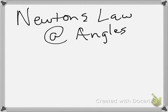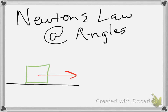So if we take a look at a box sitting on a table, and we pull this box along with a force — maybe from a string — this box is 5 kilograms and we are pulling with a force of 20 Newtons. So 20 Newtons on a 5-kilogram box.